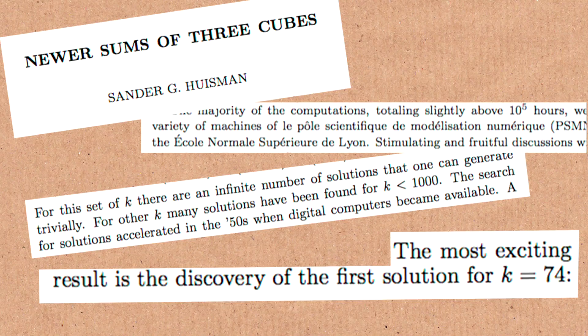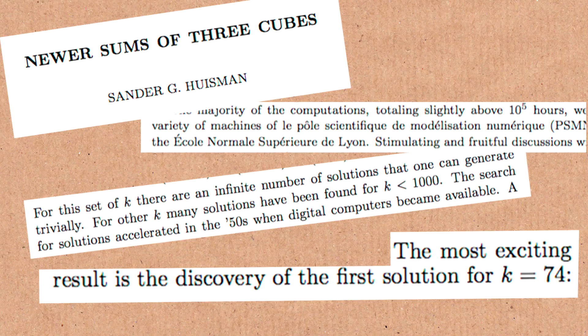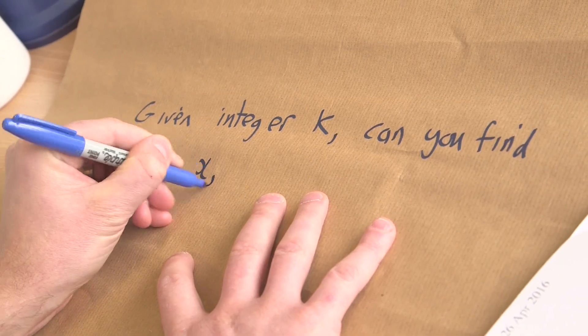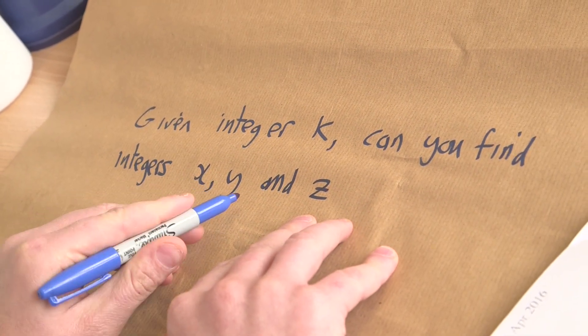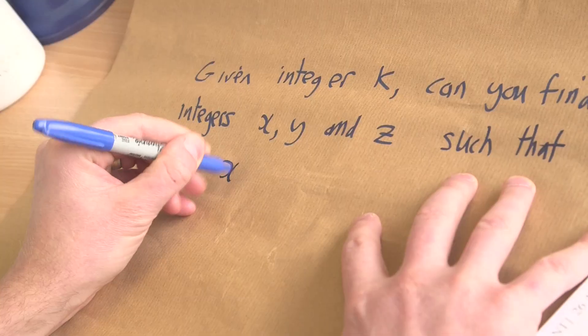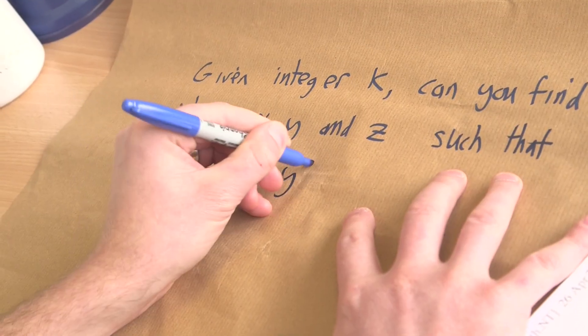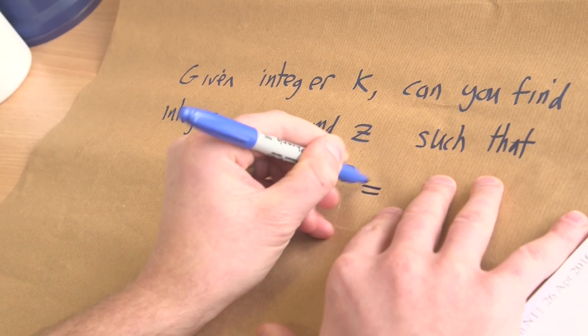We are interested in: suppose we're given an integer K, can you find integers X, Y, and Z - and these can be both positive and negative - such that X cubed plus Y cubed plus Z cubed is equal to K.